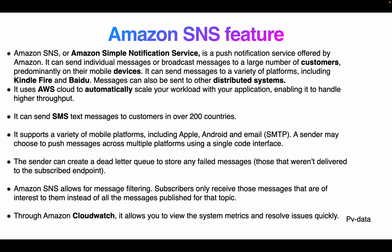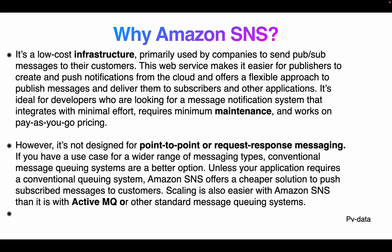Amazon SNS allows message filtering so subscribers only receive messages of interest. Amazon CloudWatch allows viewing of system metrics. It is low-cost infrastructure primarily used for companies to send pub/sub messages to their customers. The web service makes it easier for publishers to create push notifications from the cloud and offers a flexible approach to publish messages. It's ideal for developers looking for a message notification system that integrates with minimal effort and requires minimal maintenance on a pay-as-you-go pricing model.